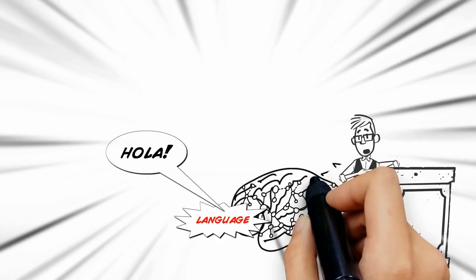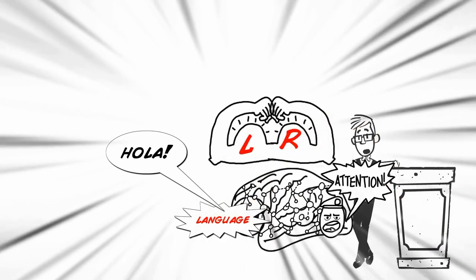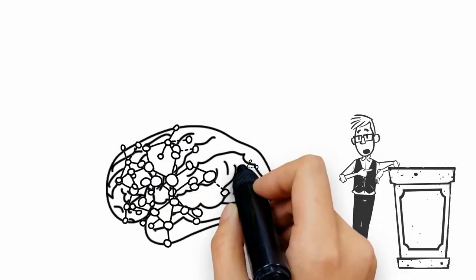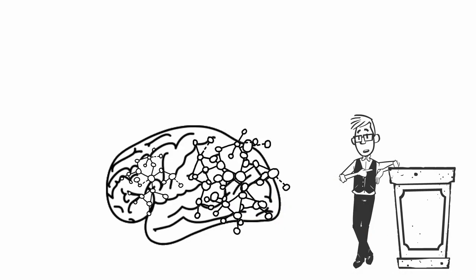It's true that some brain functions occur in one side of the brain or the other. Language tends to be on the left, attention more on the right. But people don't tend to have a stronger left or right side brain network. We just don't see patterns where the whole left brain network is more connected and the whole right brain network is more connected in some people.